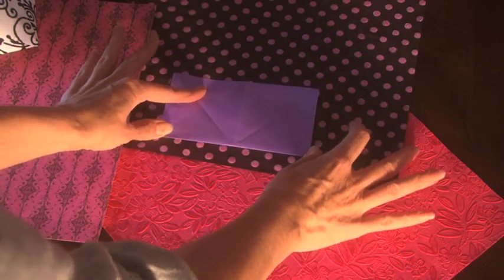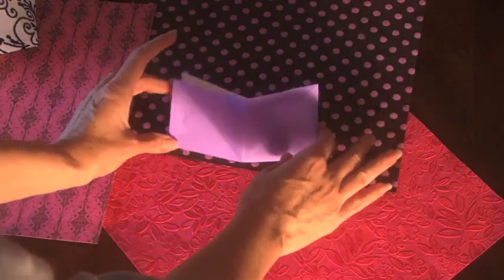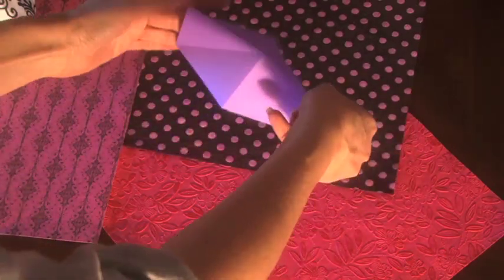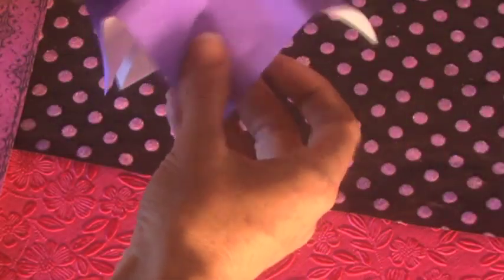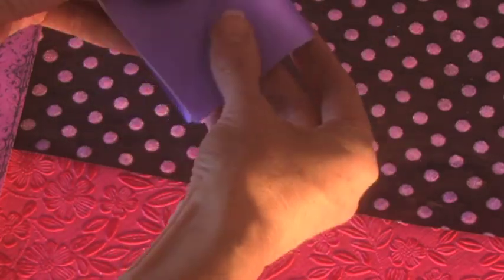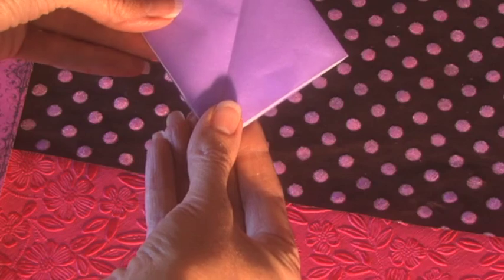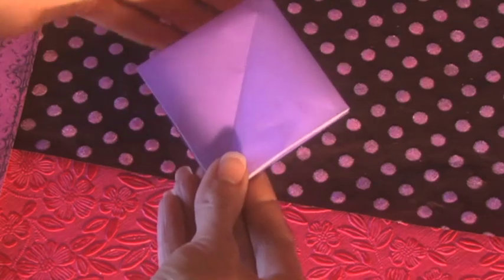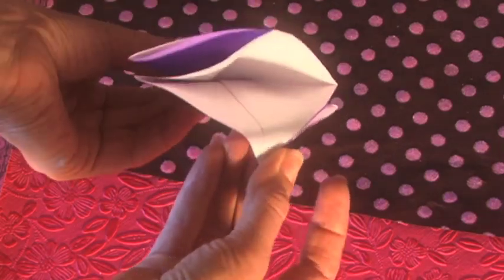Okay, so now what you have is essentially a pattern where it points down, and this is going to fold in and make a diamond pattern just like that. Now you want to make sure that the open part is facing up.